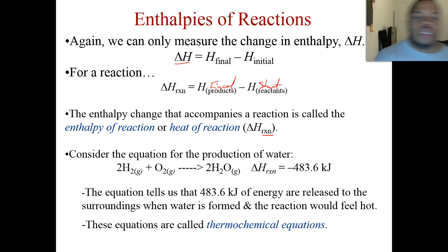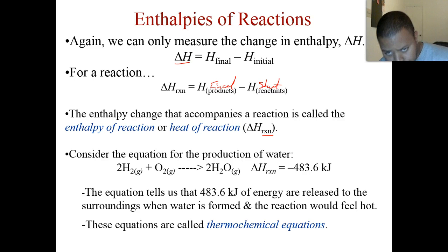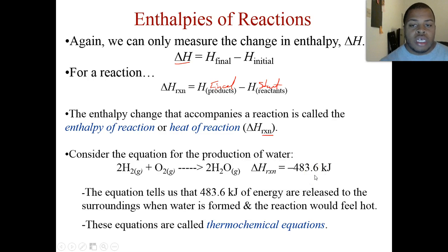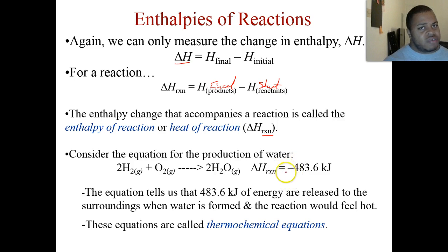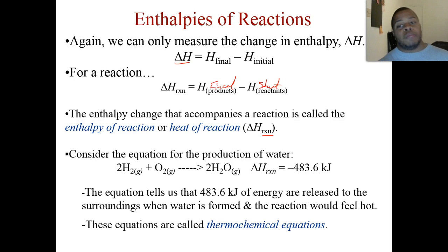For the example: two moles of hydrogen plus one mole of oxygen forms two moles of water. The delta H for this reaction is negative 483.6 kilojoules, telling us that 483.6 kilojoules of energy are released to the surroundings when we form water — the reaction feels like it gives off heat. Be careful on the AP exam: if a question asks how many joules of energy are released, it's not necessary to write the negative sign, because 'released' already accounts for the direction. But if it asks for the change in energy, you must include the negative sign.